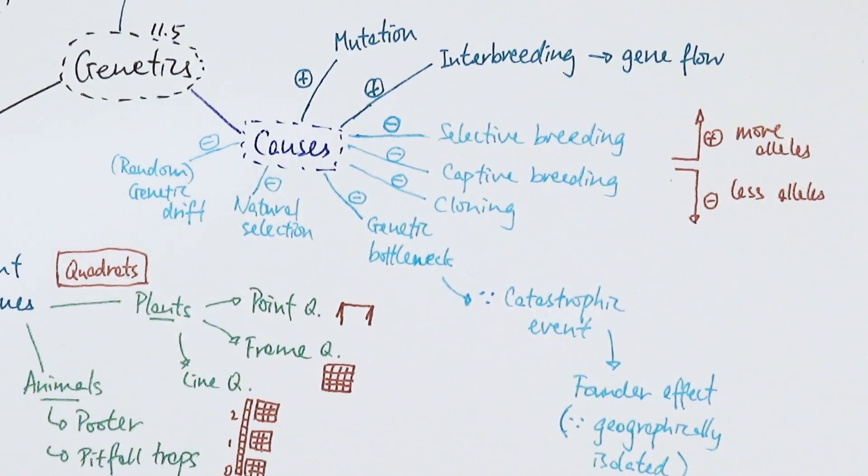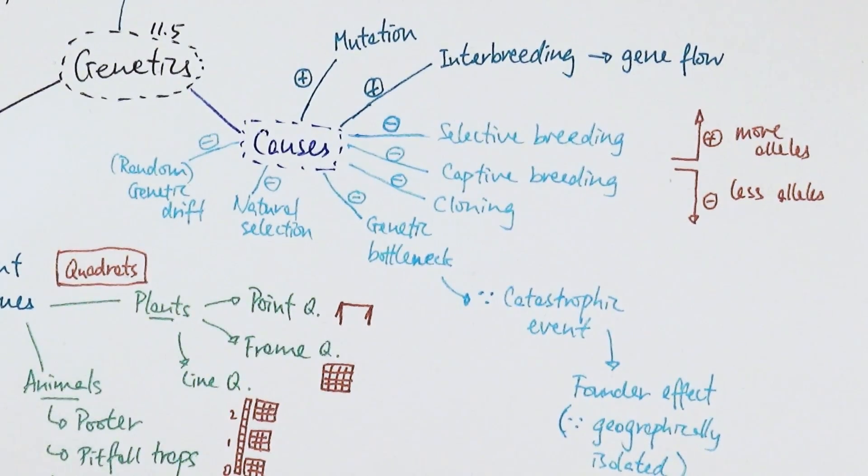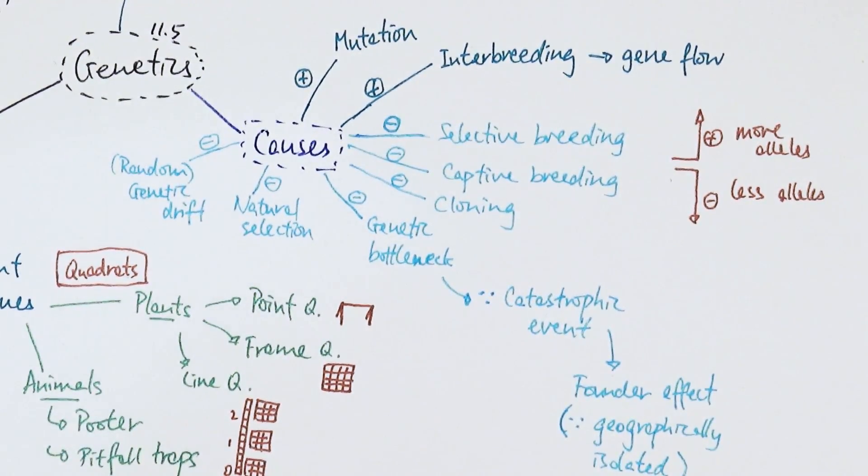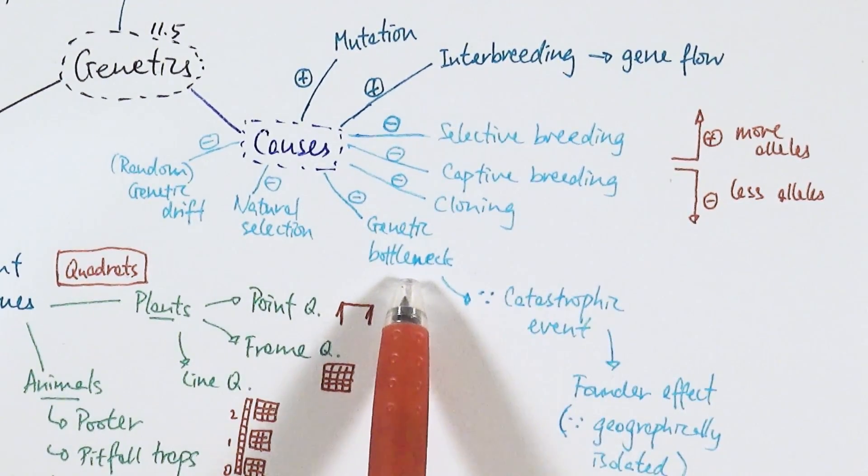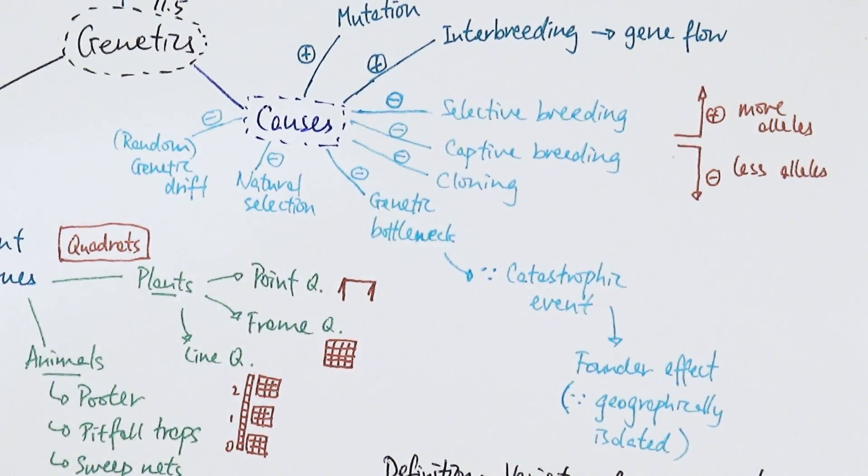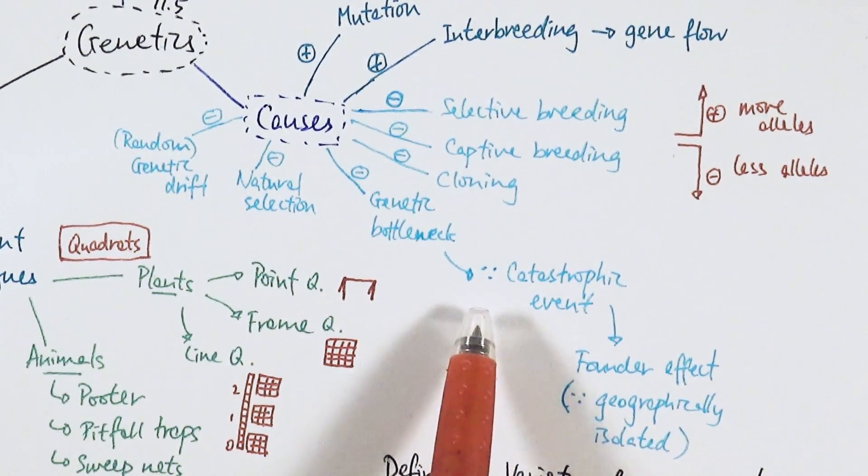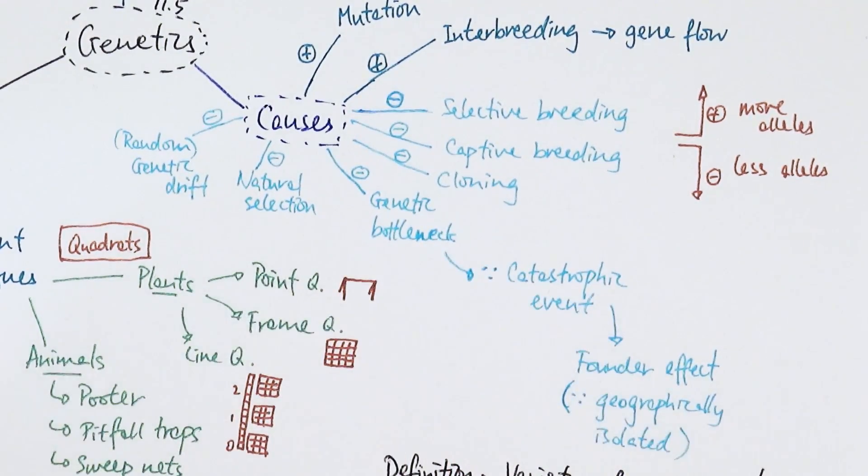Random genetic drift refers to the random nature of passing on alleles. Natural selection, due to environmental changes, picks certain alleles advantageous to survival, which are passed on more easily, losing variety. Genetic bottleneck is usually caused by catastrophic events like volcanic eruptions, earthquakes, or tectonic plate movement. Lots of individuals may be lost or killed, decreasing the gene pool. From many alleles, you suddenly have very few to pick from.